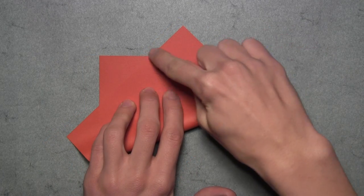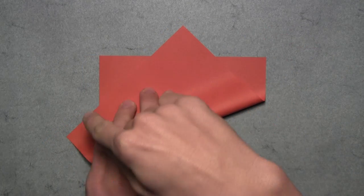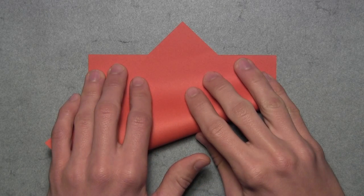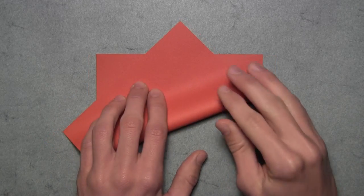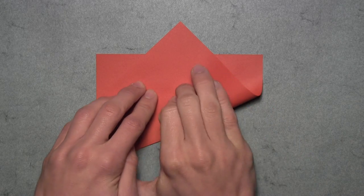So what we want to do instead is try to make sure that these four triangles are all the same size. You may have to slightly adjust the paper just to get it in the correct position, and once you've done that then you can make your crease.